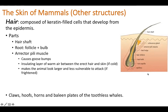There are other structures unique to mammalian skin. Hair is composed of keratin-filled cells that develop from the epidermis. There are two parts: the hair shaft, which is visible outside the skin, and the root, which is inside the skin. The root consists of the follicle — the depression in the skin where the hair sits — and the hair bulb at the end of the root inside. Capillaries also penetrate into this region.